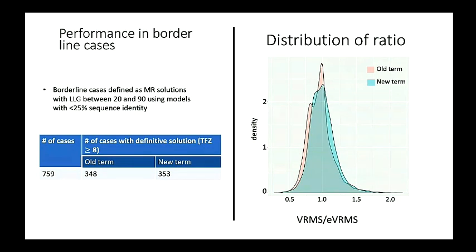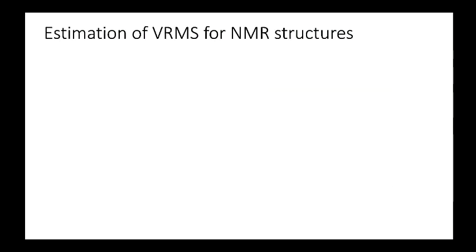But as a whole, the distribution of this ratio between VRMS and EVRMS—we expect it to be one. Of course it is not one because our estimates are not perfect. But you can see that the previous estimate was not really Gaussian, but the new estimate is probably better distributed, especially this shoulder. What it means is there was an overestimation of errors when sequence identity was used, but using the Gones score has made that shoulder disappear in the new term.